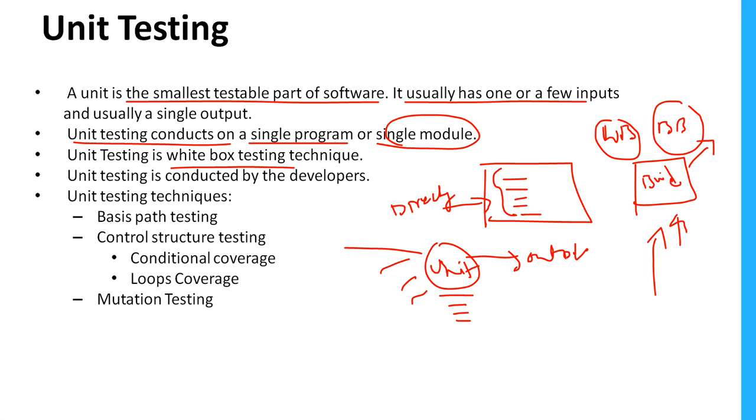Normally unit testing is conducted by developers because they're responsible for writing the code. Unit testing techniques: as a developer we need to use certain techniques to perform unit testing like basis path testing, control structure testing, or mutation testing. Let's see what those techniques are.